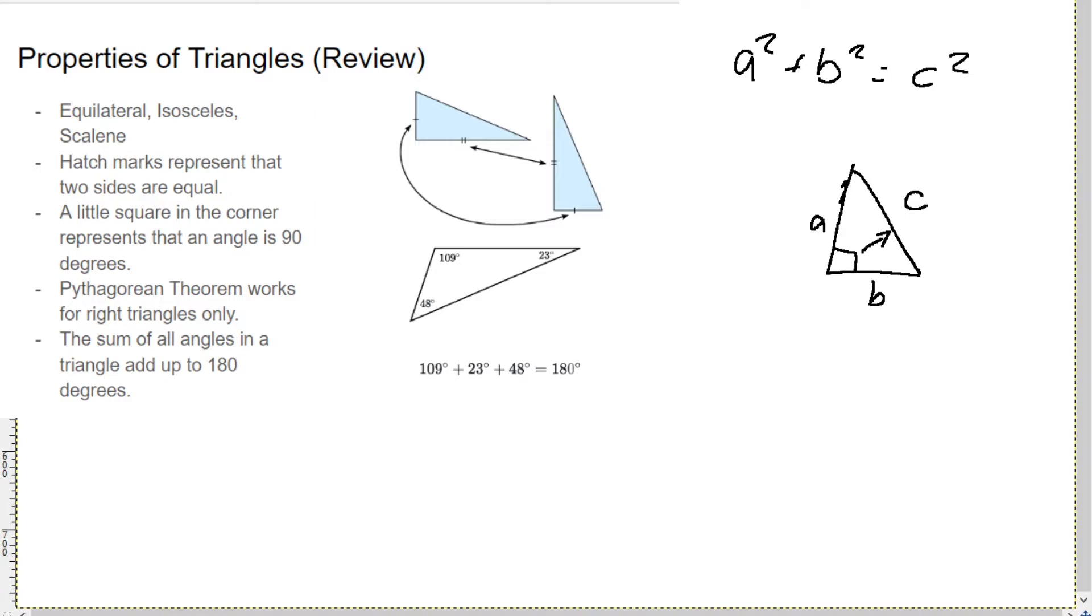The sum of all angles in a triangle add up to 180 degrees. This is an important one. This one is used a lot in these questions, because you're basically given two angles, and then you might have to figure out the third. And that might be the one piece of information you need to correctly answer the problem. Okay? So we have 109, 48, and 23 degrees as our angles there. And if you add them all up, you'll see it equals 180.